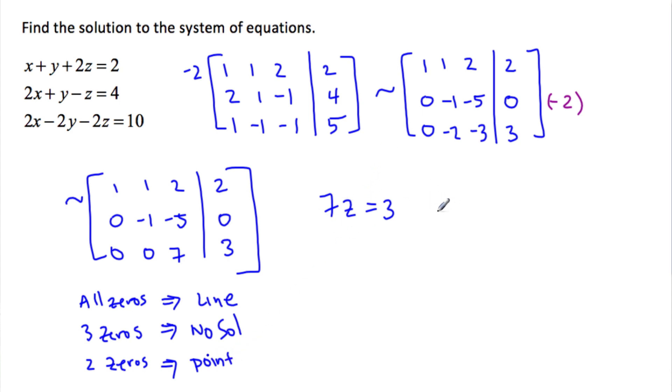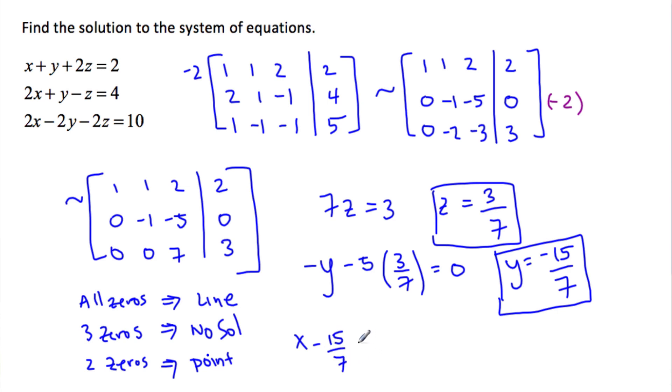So now if we start, we have 7z equals 3, so z is equal to 3 over 7. Plug that in right there and I have minus y, minus 1y, minus 5z, which is 3 7ths, equals 0. So that means y is equal to negative 15 over 7.